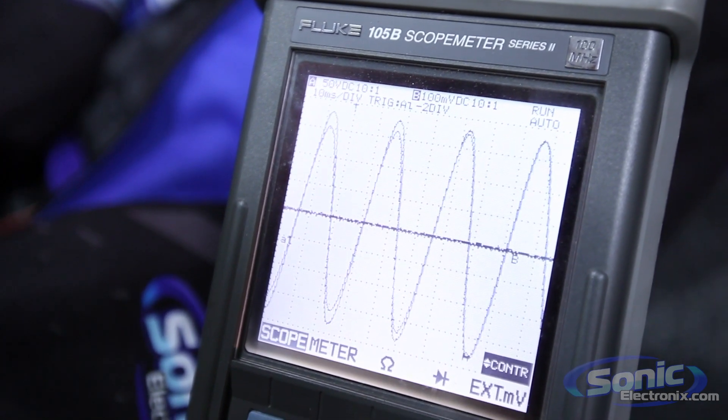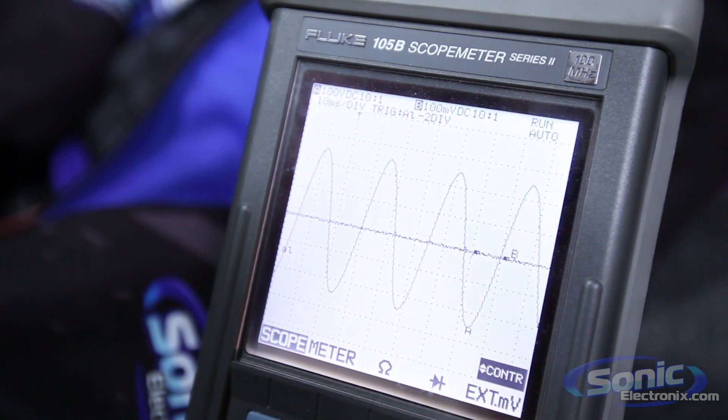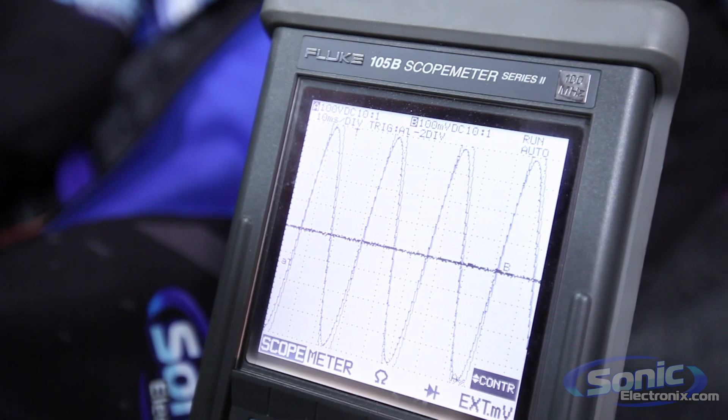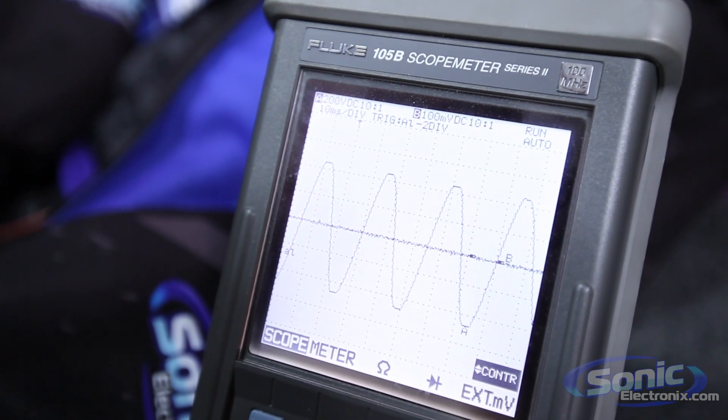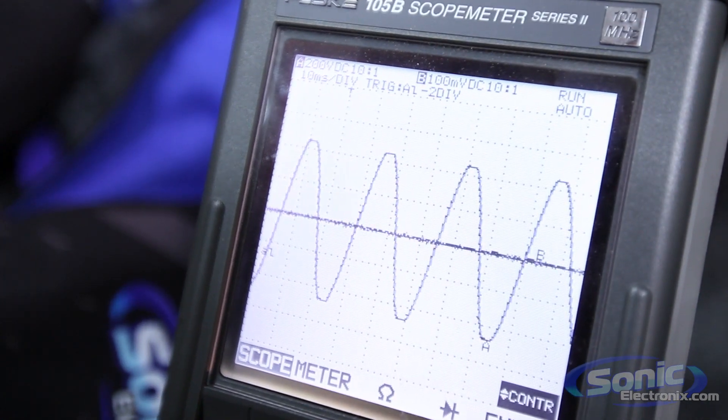So as we creep up the amplifier gain, you can still see that we have a nice smooth sine wave. As you keep going up, you'll start to see right there at that point, we have a little bit of a square off at the top and the bottom of the sine wave there.